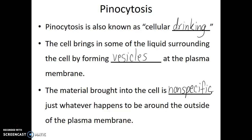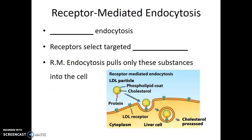Often these cells are looking for food, nutrients, or other things, but they're just taking in any of the liquid immediately surrounding the cell. In contrast, receptor-mediated endocytosis is a very specific form of endocytosis, where there are receptors on the plasma membrane that are looking for very specific substances, and it pulls only those substances into the cell.